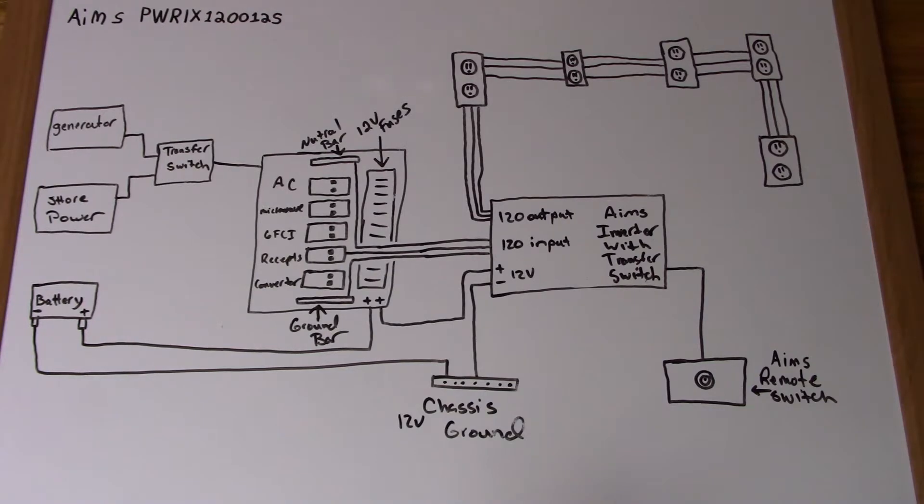The inverter we're using is the Ames PWRIX120012S. It's basically a 1200 watt inverter capable of doing a sustained 2400 watts with 1200 watts continuous. The other thing we bought with this is the remote power switch. I'll put a link to both of these down in the description so you can find them on Amazon. I was actually relatively impressed - this inverter is a pure sine wave inverter.